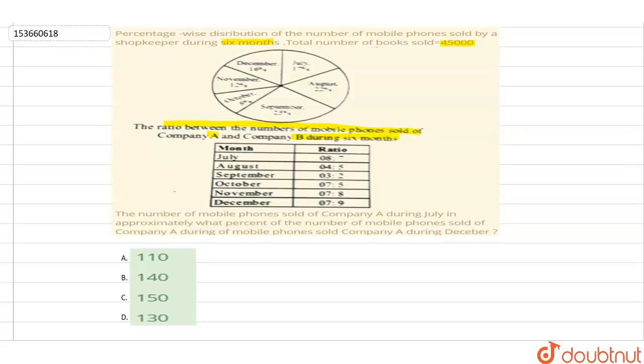Now the question asks: the number of mobile phones sold of company A during July is approximately what percent of the number of mobile phones sold of company A during December. So this is our question. Let's start with the answer.